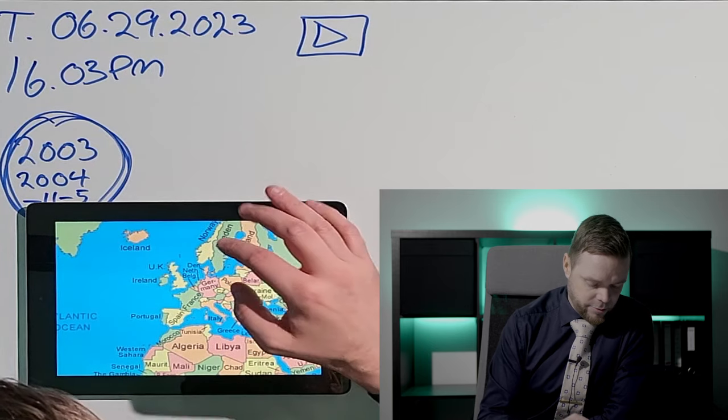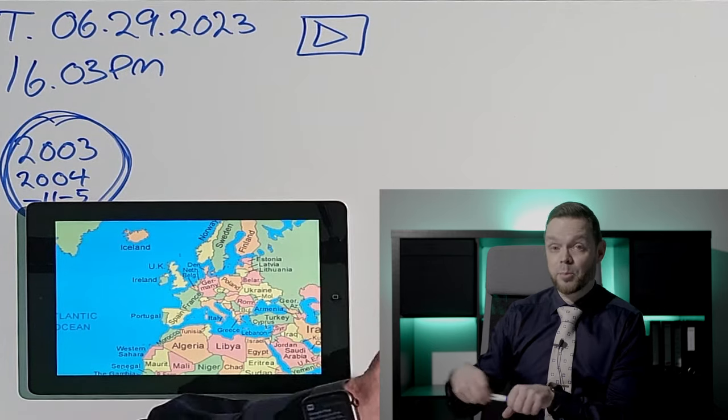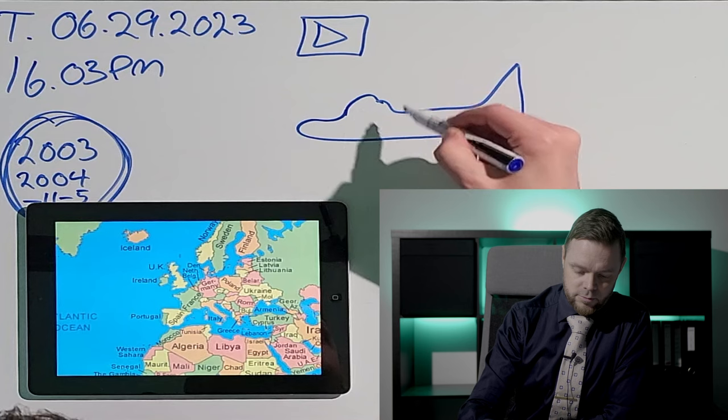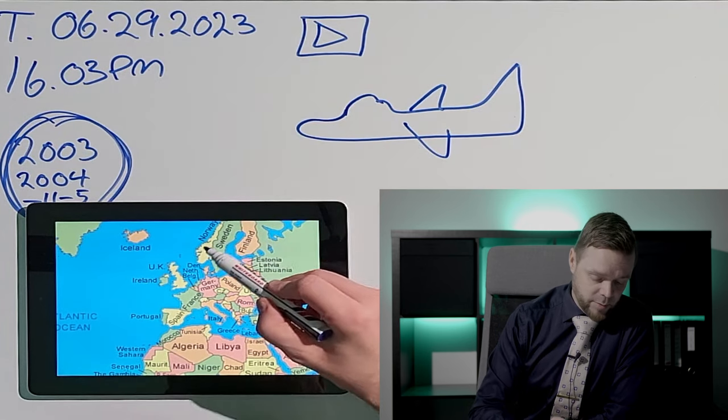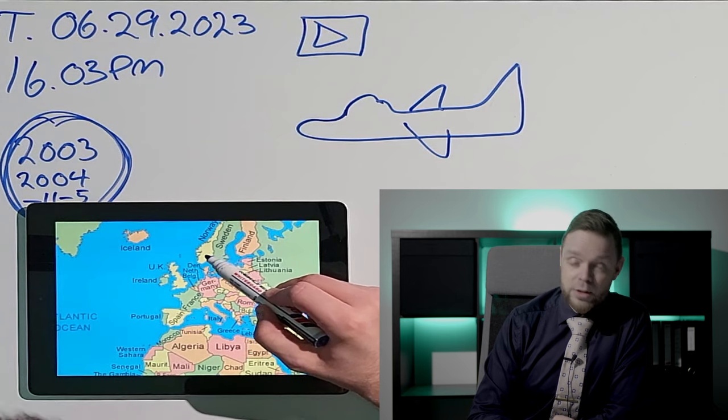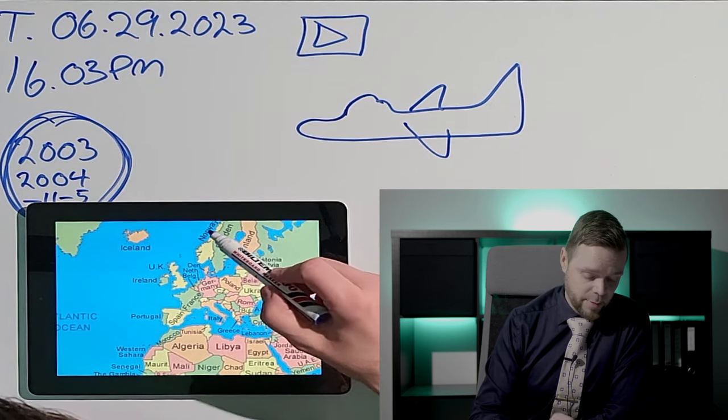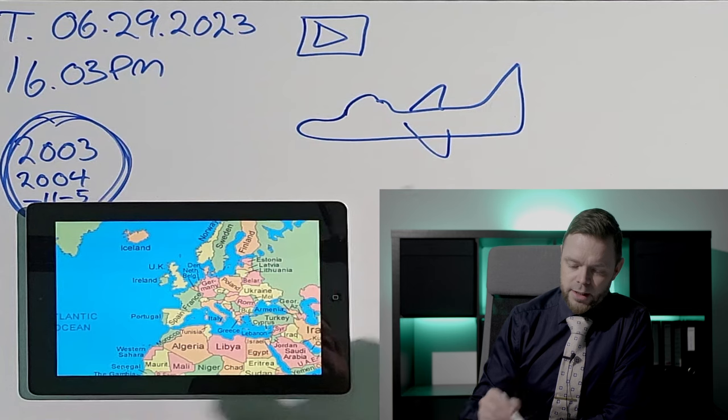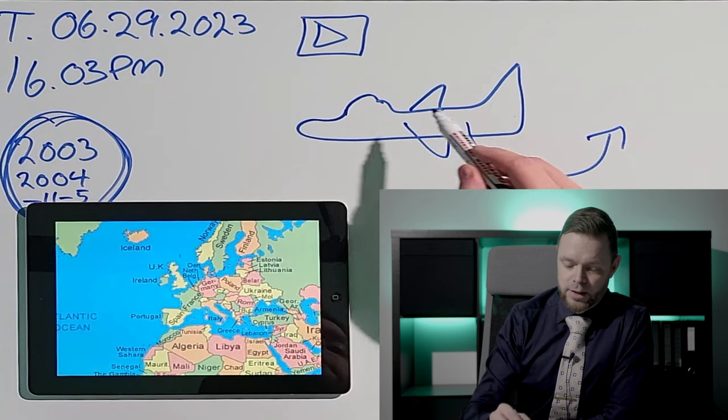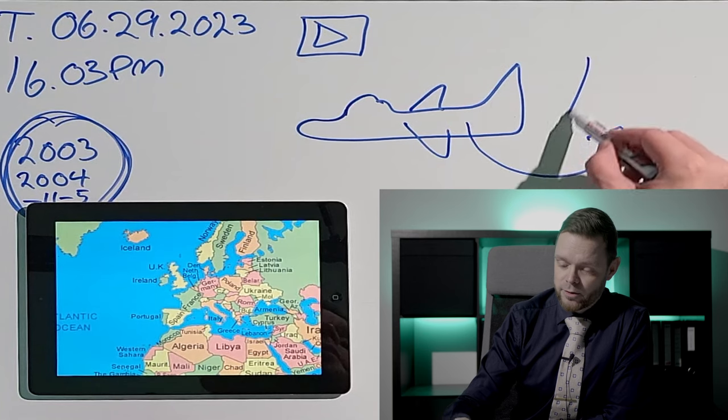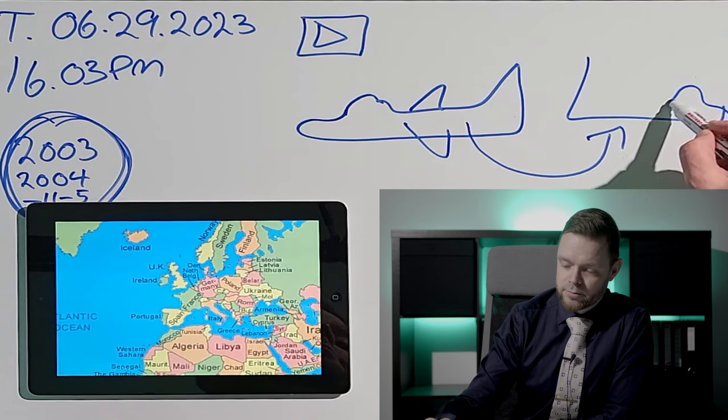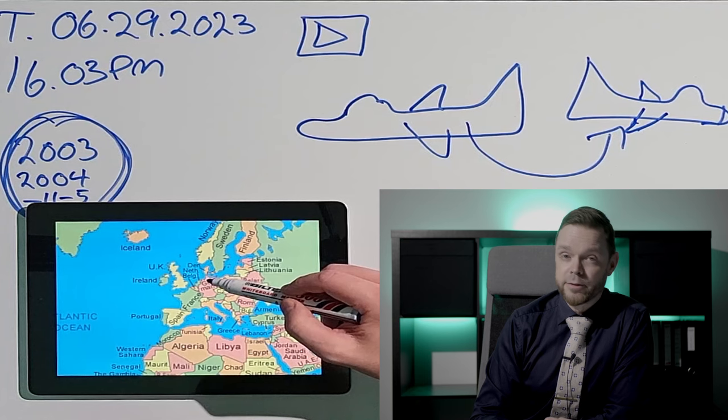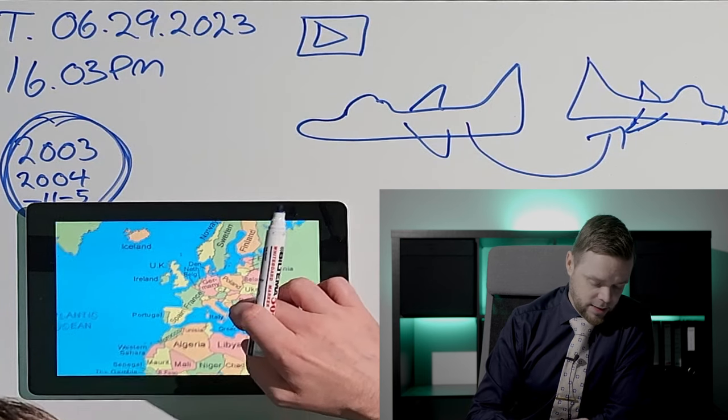Then from... so a plane... So I took a plane from Bodø to Oslo. Oslo is the capital of Norway. Then I changed planes, left this plane, got on another plane in Germany, in Frankfurt.